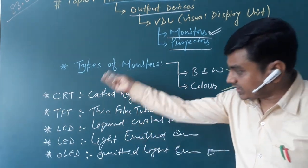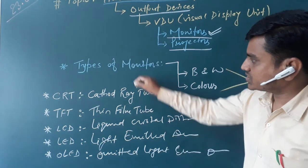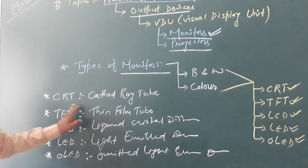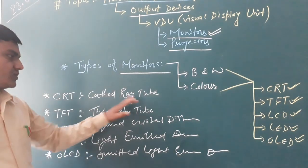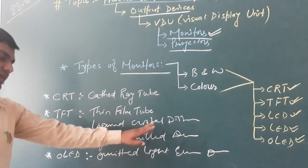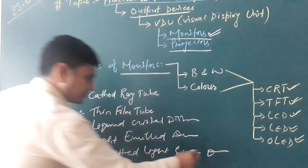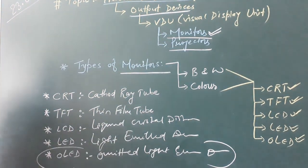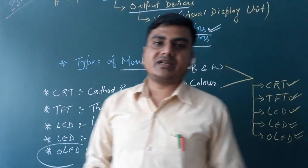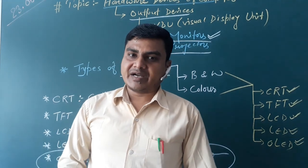These all technologies — CRT, TFT, LCD, LED, and OLED — are also used inside TV technology and for monitors. So finally, there are normally these types of monitors: CRT (Cathode Ray Tube), TFT (Thin Film Transistor), LCD (Liquid Crystal Display), LED (Light Emitting Diode), and OLED (Organic Light Emitting Diode), which is the newest technology we are using today. I hope you all have understood the types of monitors and what monitors are used for. In the next video, we will discuss more about this. Have a good day.